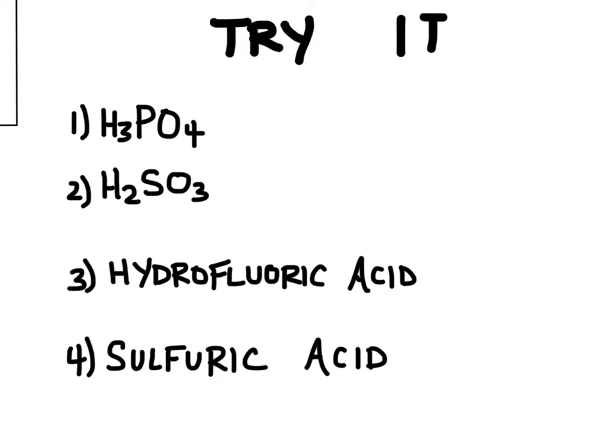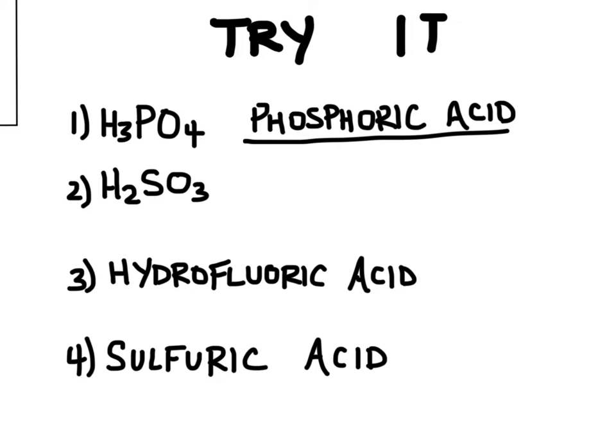The first one's called phosphoric acid because this PO4 is phosphate. And I'm going to change it from ate to ic. So phosphoric acid. The second one here is called sulfurous acid because this right here is called sulfite. So I'm going to change it from ite to ous. Sulfurous acid.